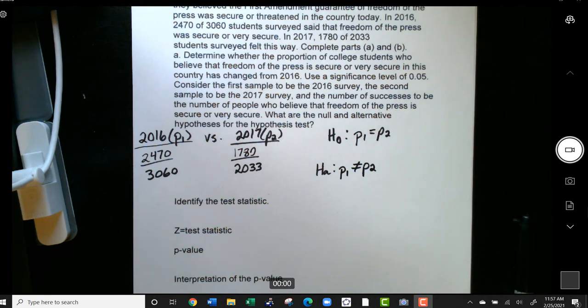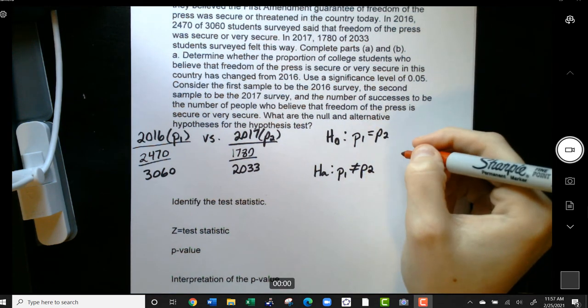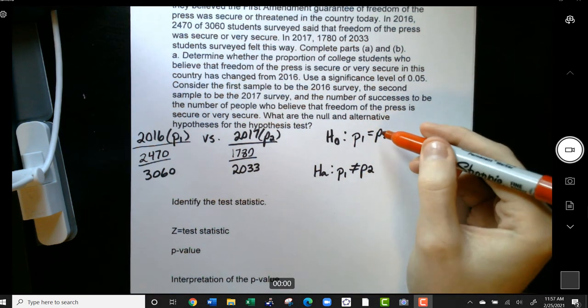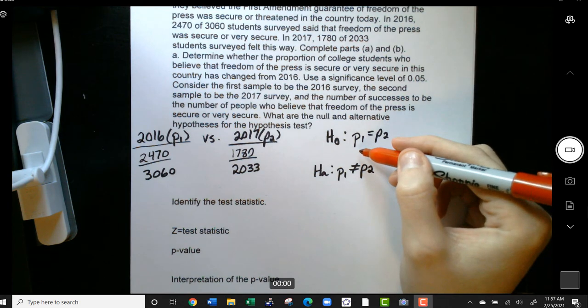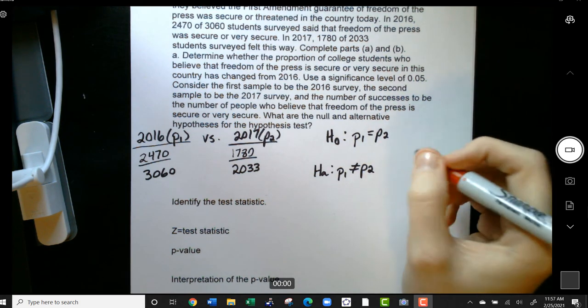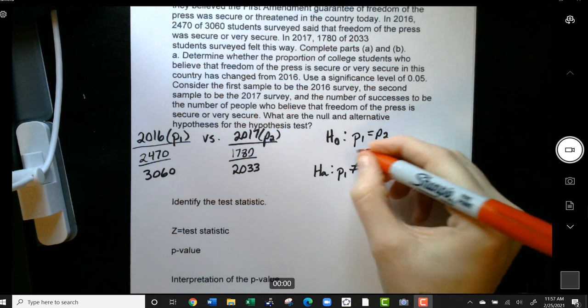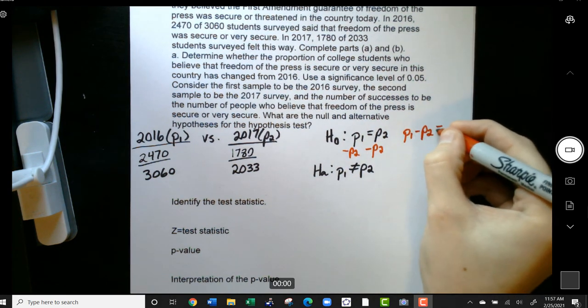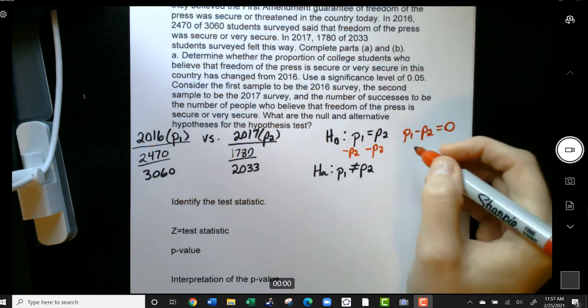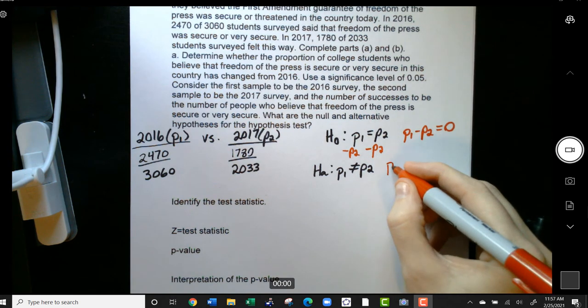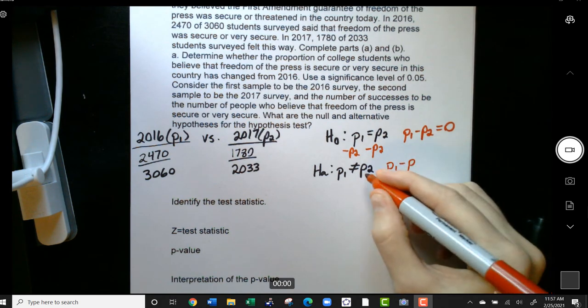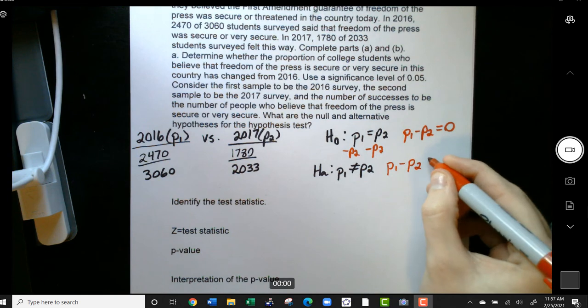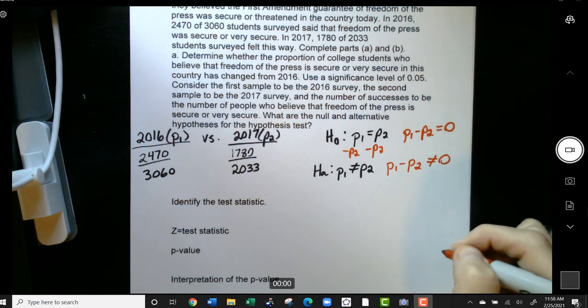Now, before we run into finding the z-test statistic and all of that, there's actually another way to write this. Another way to write these is to move P2 over to one side. So subtract P2 from both sides, and that is going to tell us that the difference between these two is zero. So if these are the same, if we subtract the two, we're going to get zero. If we do this here and subtract P2 from both sides, we're going to get that the difference between them is not zero.